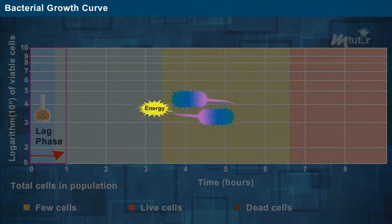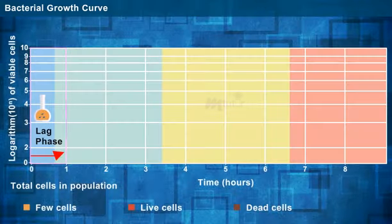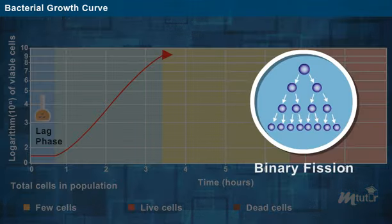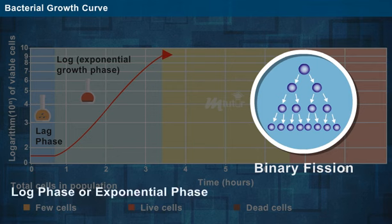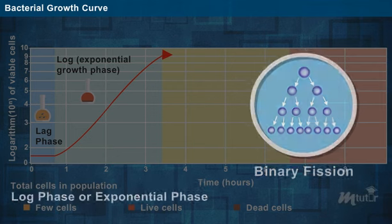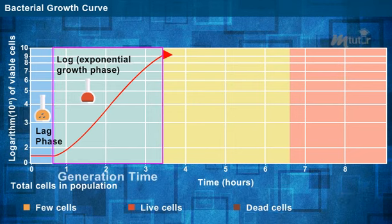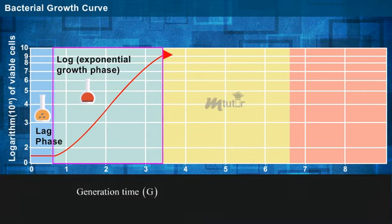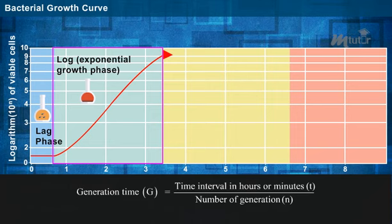Once the bacteria acquire the required amount of nutrients, its metabolic activity is found to increase. Thus, the bacteria undergo binary fission and their population increases exponentially at a logarithmic rate. This phase is termed as log phase or exponential phase. The stipulated time required to double the number of bacteria in the medium is called generation time. It is represented as g and is equal to the time interval in hours or minutes t divided by the number of generations n.